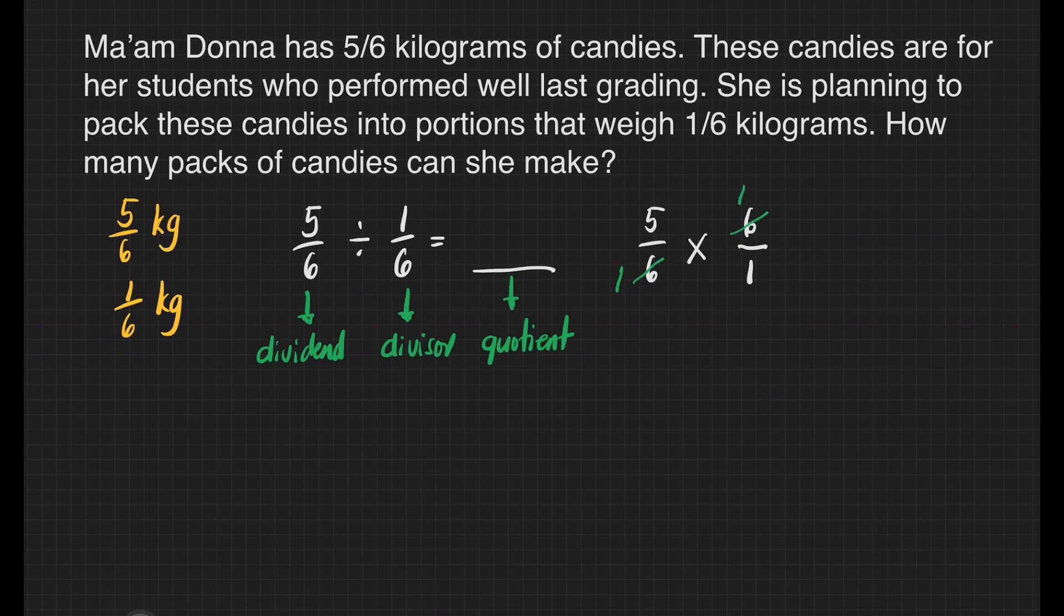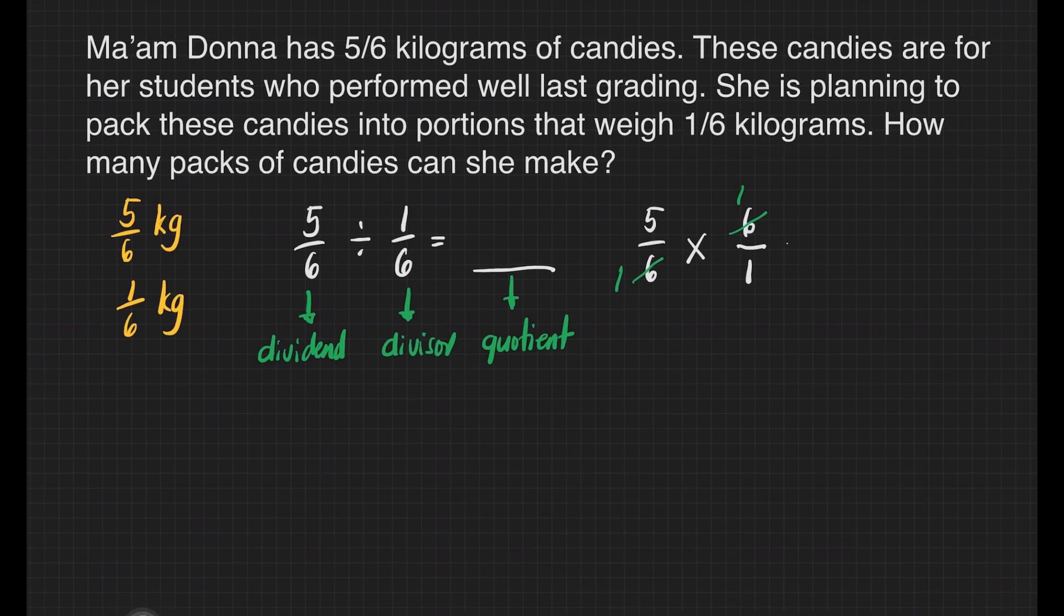Why do we need to cancel? Because it will make our work easier. We're ready to multiply. Five times one is equal to five. One times one is equal to one. Five divided by one is equal to five. This means that Ma'am Donna can make five packs of candies out from the 5/6 kilograms that she has.